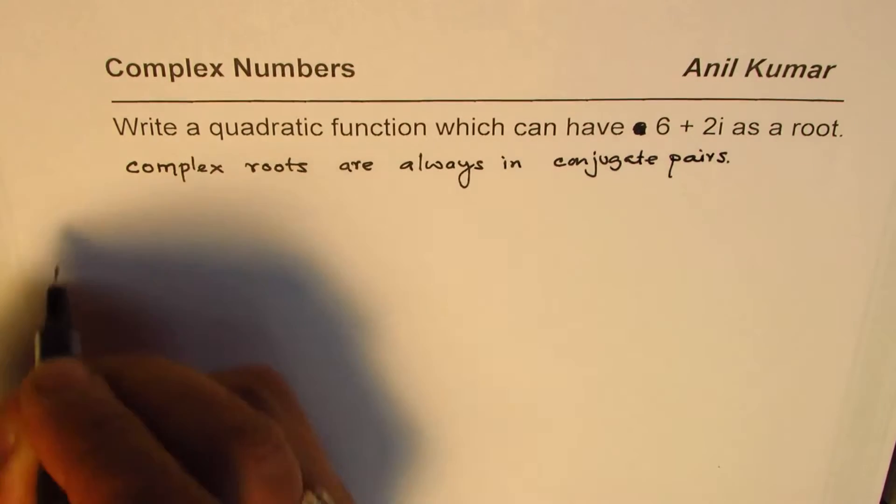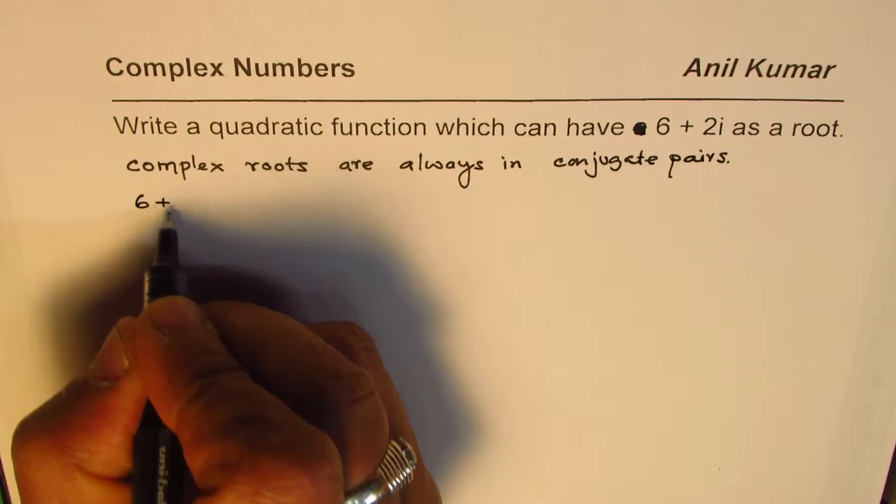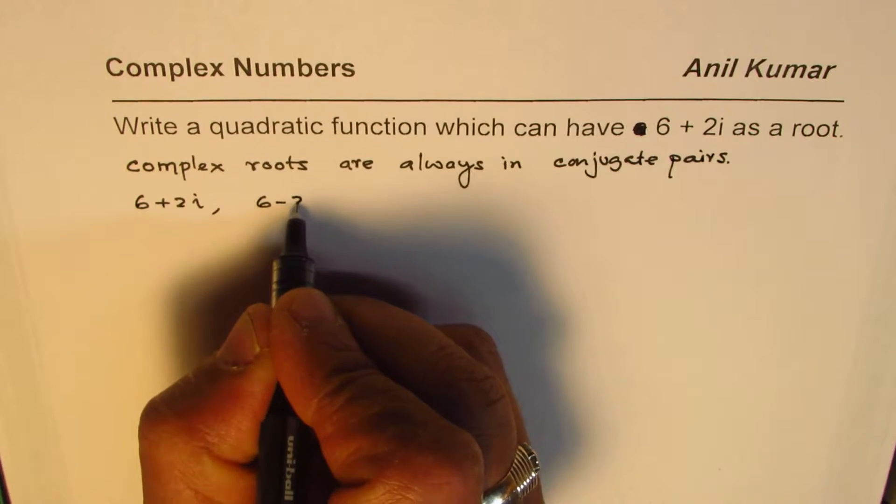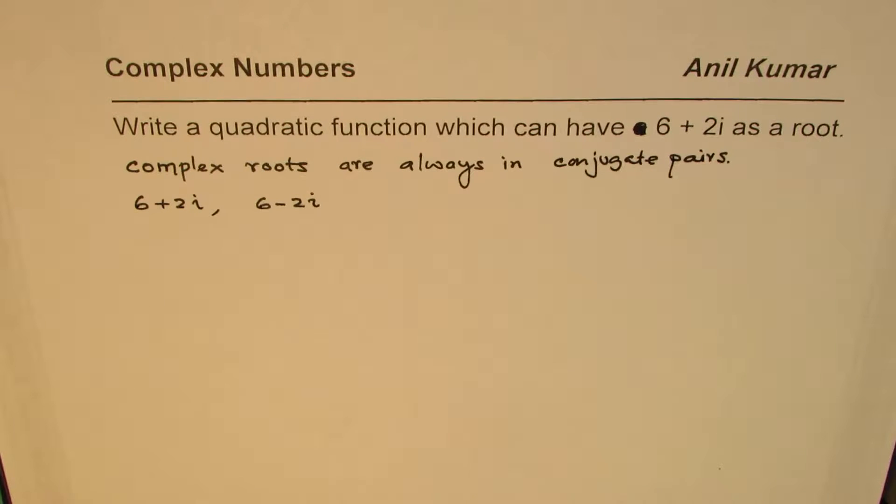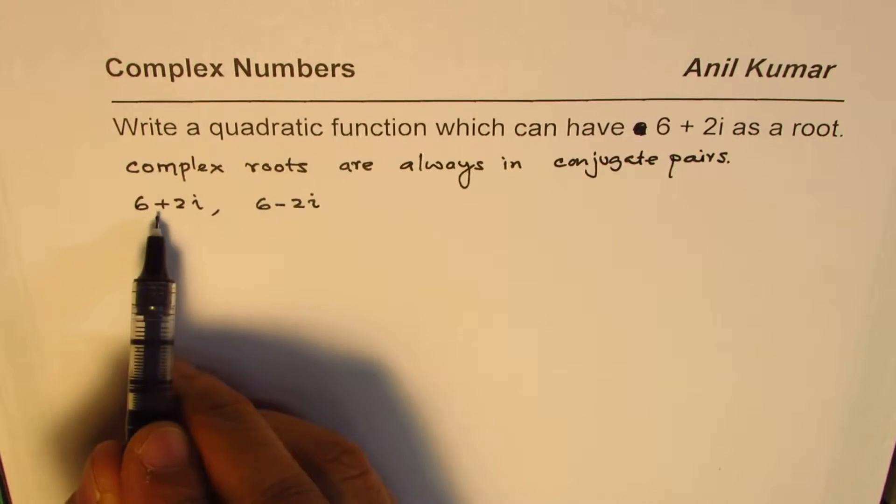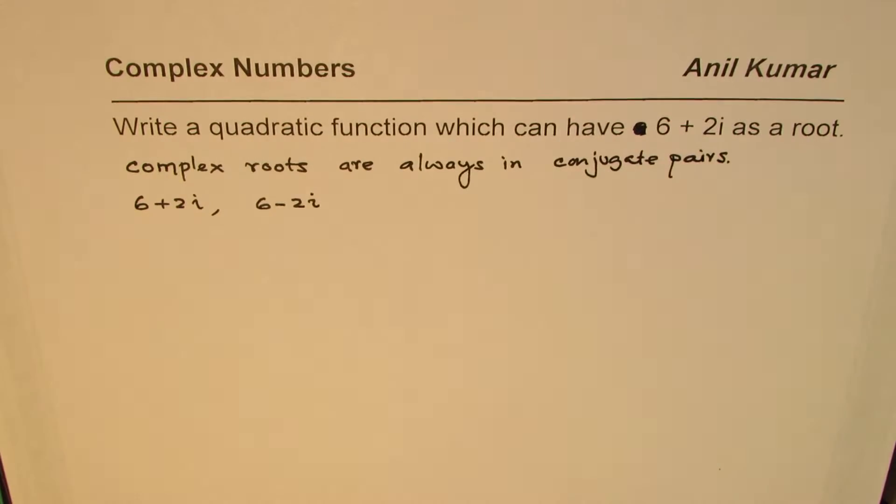So, if we are given one root, then the roots are 6 plus 2i. This is what is given. The other root has to be 6 minus 2i, right? So, that is the first statement. Now, we need to find a quadratic function which has these two as its root.